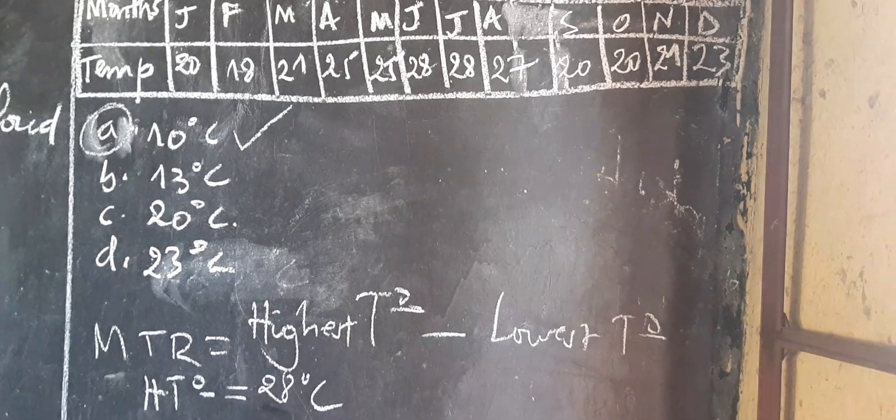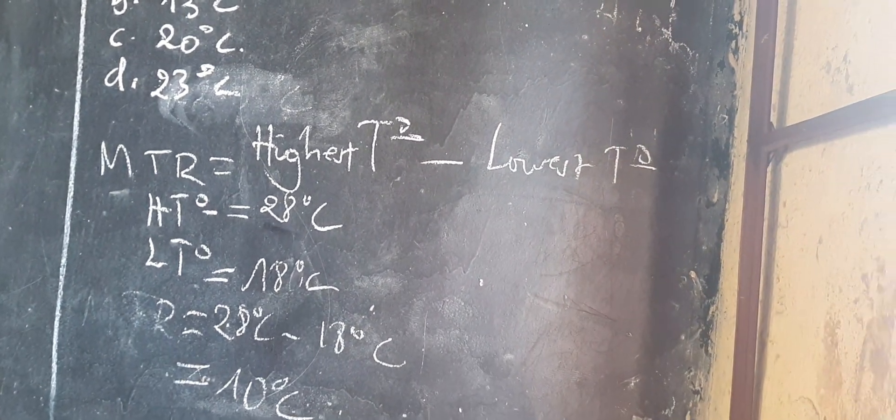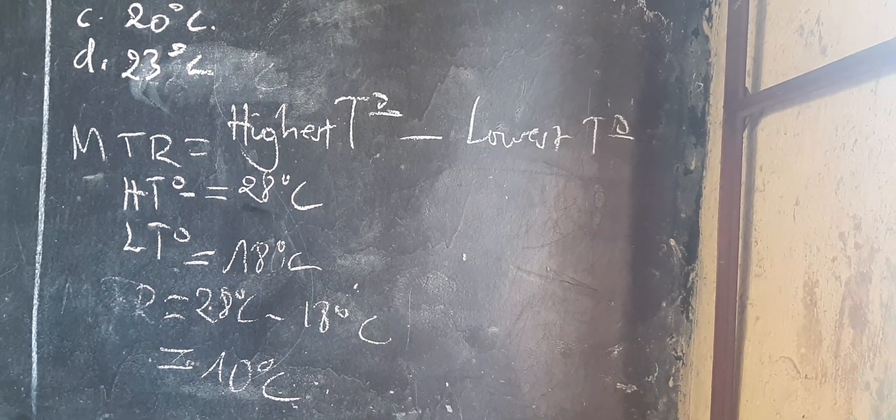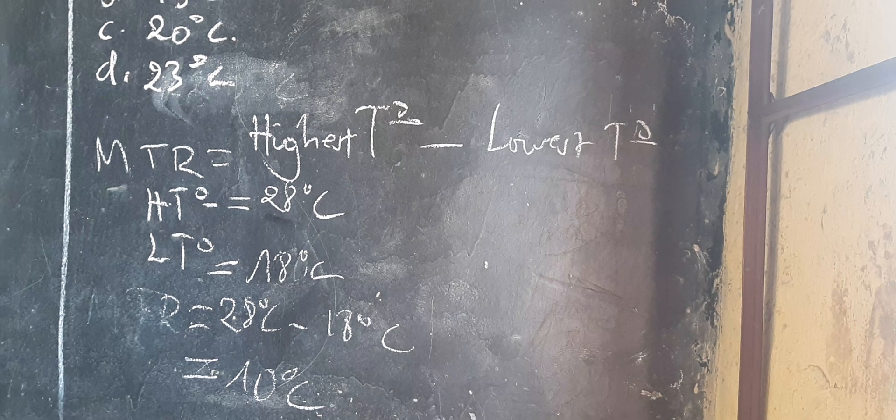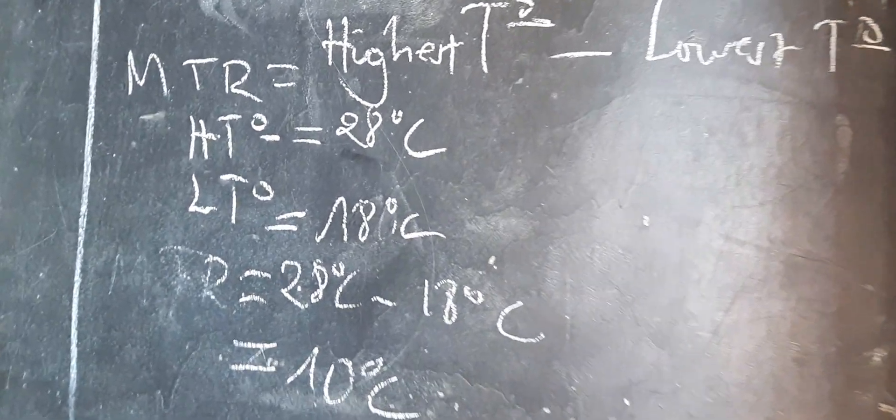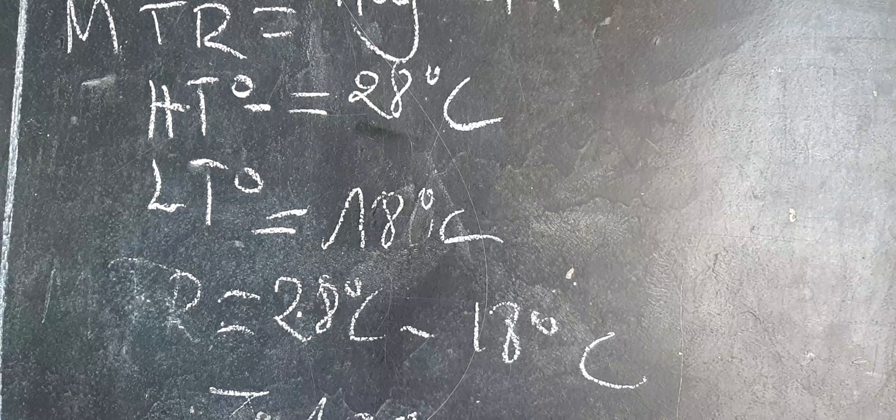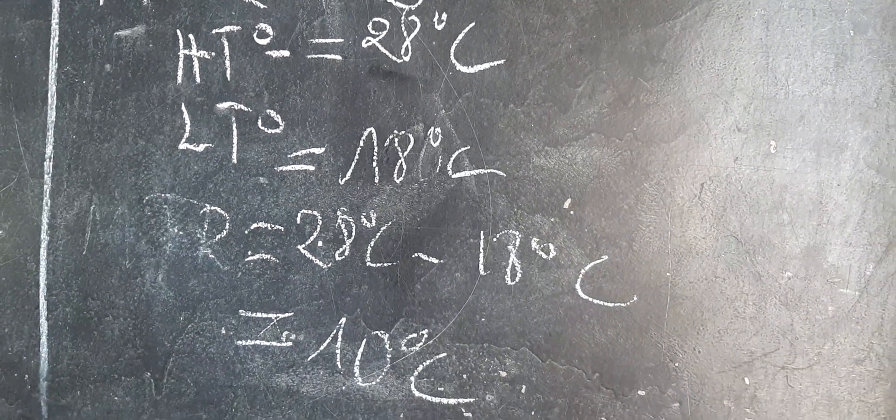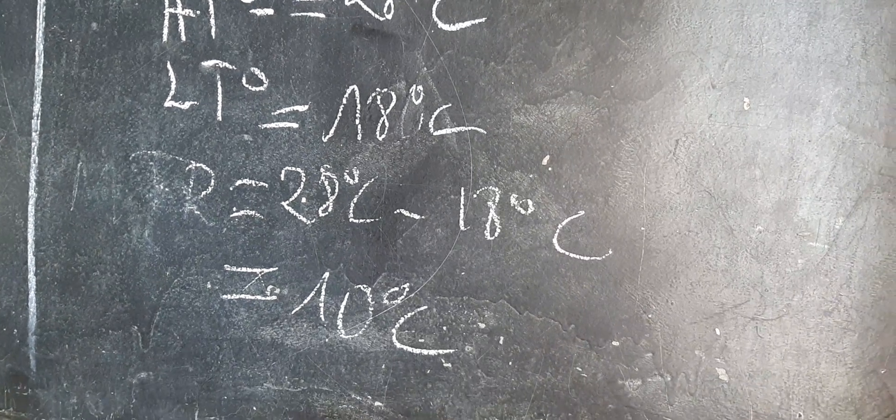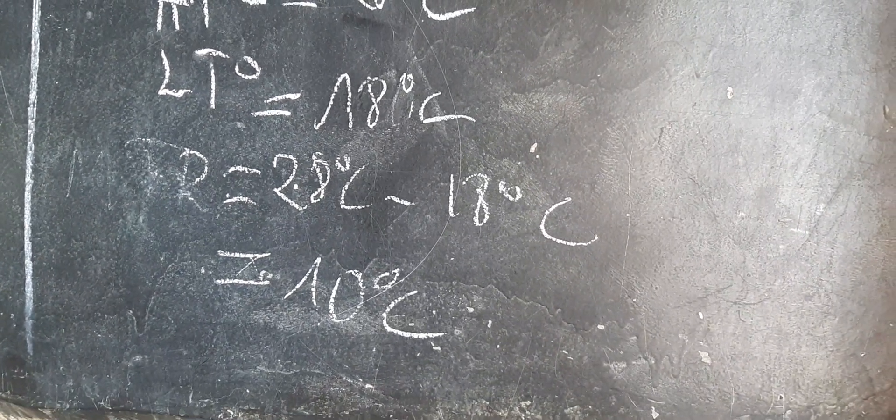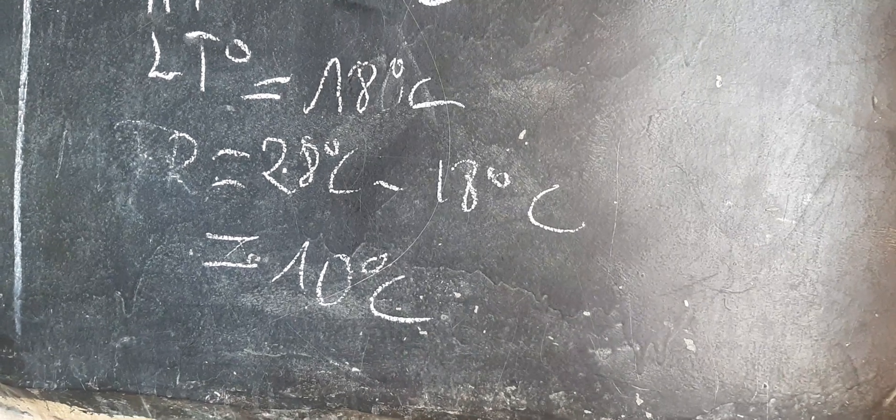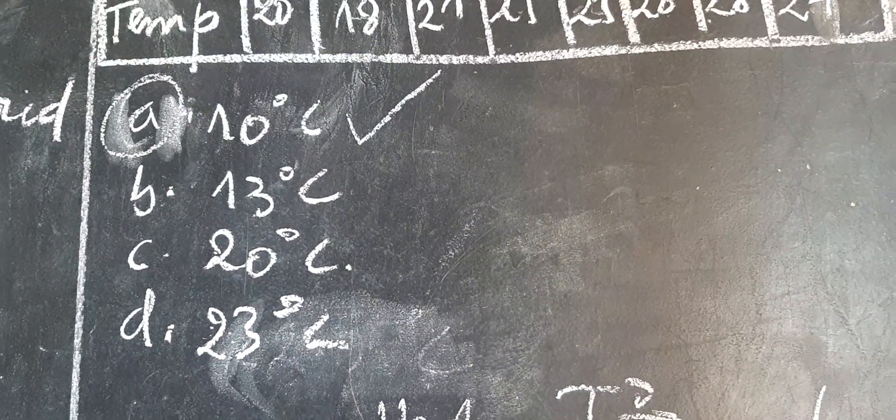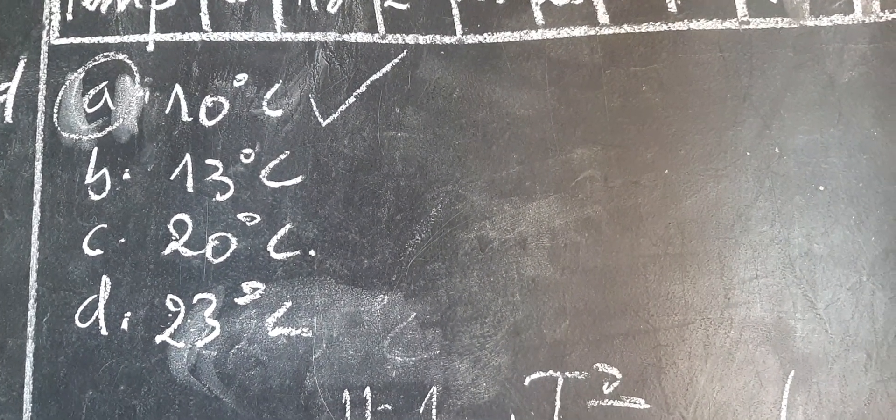So we first do the calculations. When we are calculating the monthly temperature range, we take the month with the highest temperature minus the month with the lowest temperature. So we have seen that the highest temperature is 28 and the lowest temperature is 18. So we take 28 degrees Celsius minus 18 degrees Celsius and then we get 10 degrees Celsius. The correct answer is A, where we have 10 degrees Celsius, referring to the calculation we have made.